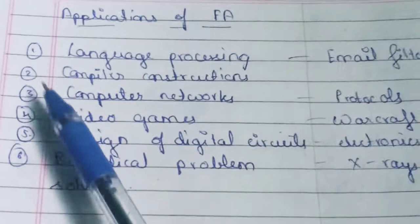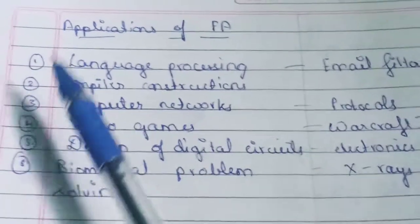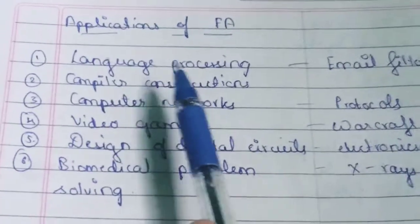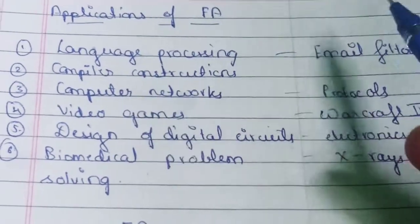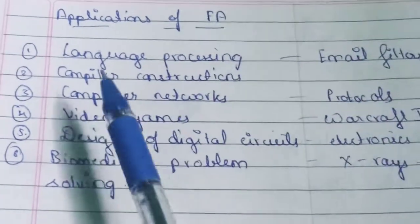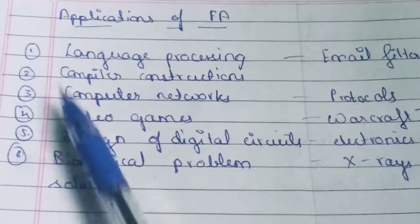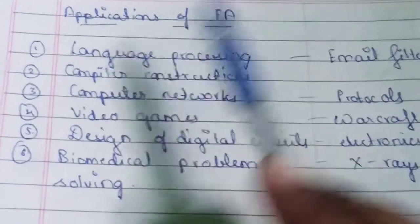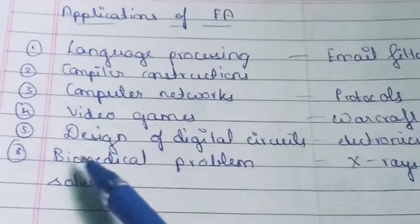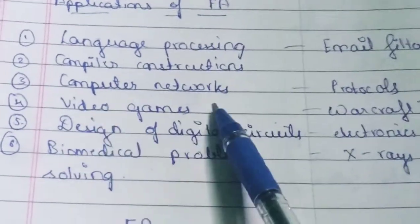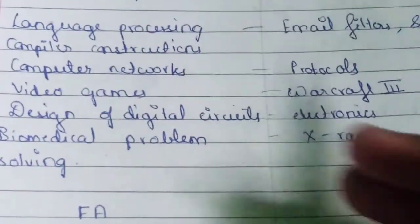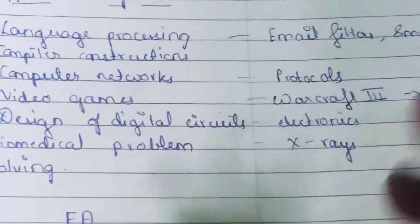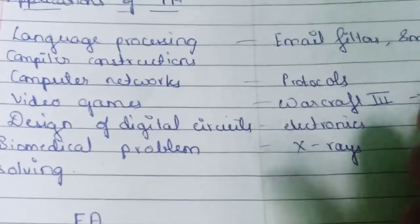Next is compiler construction. A compiler is an application where a high-level programming language is converted into a low-level language like machine code, so that the program can be executed. In constructing those compilers, we use finite automata algorithms.